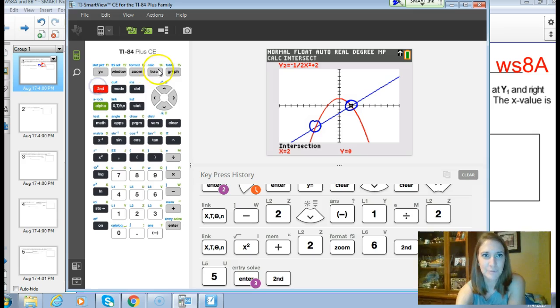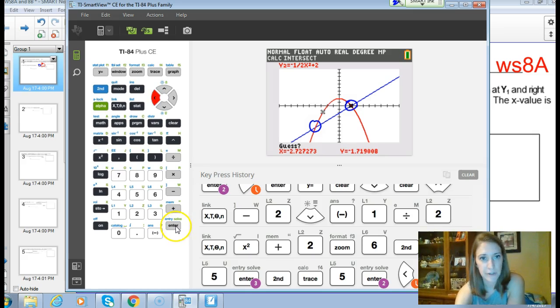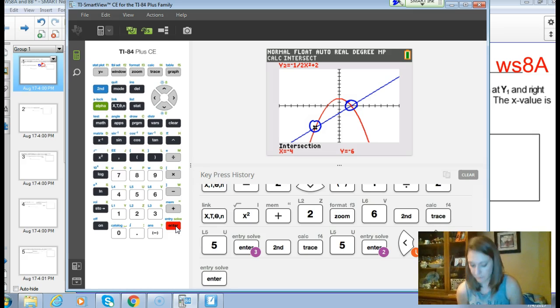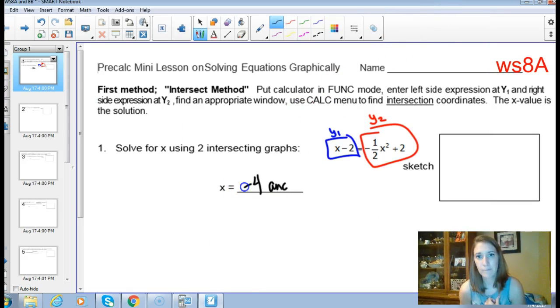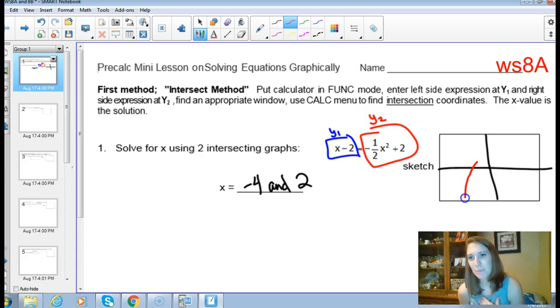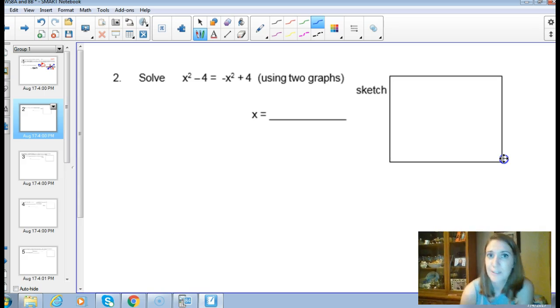We're going to do all those steps again. Intersect, and this time before I hit enter the third time, I'm going to scroll along my curve a little bit until I'm closer to the other one. X equals negative 4. So my two solutions are negative 4 and 2. Over here, you're going to want to sketch the upside down parabola and x minus 2, showing these two intersection points.